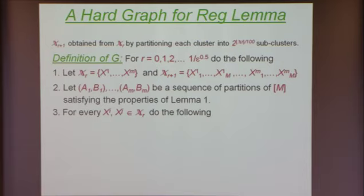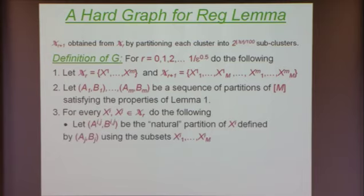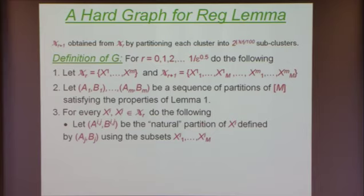How will I partition X_i into two sets? I think of the small clusters inside X_i as having indices 1 up to M. Each partition A_j, B_j partitions capital M into two sets. So I take the indices in A_j, group those clusters together into one set A_{ij}, and take the indices in B_j to define the set B_{ij}. This gives a partition of X_i into two sets. What can we say about the sizes of A_{ij} and B_{ij}? They're the same size, because A_j and B_j partition capital M into two sets of size M over 2.